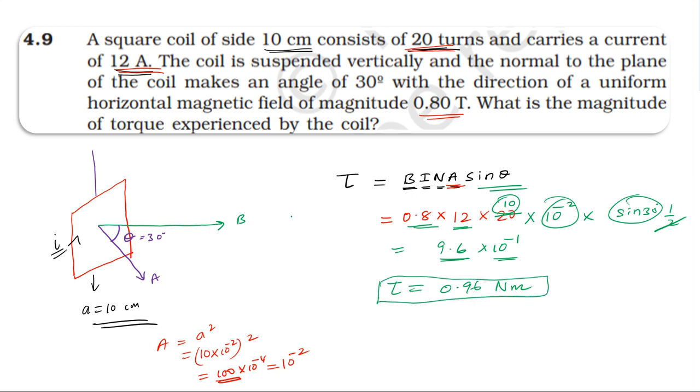The result is 0.96 newton metre. The area of the coil is perpendicular to the plane.